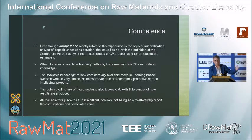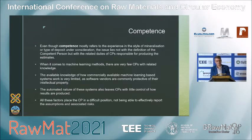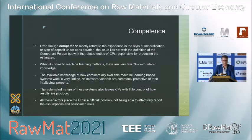In fact, even if we don't consider the reporting codes and just consider good practice — how can you possibly claim that you know what you're doing when you don't know how your software works? The automated nature of these systems also leaves competent persons with little control of how results are produced. Because these automated systems have been hard-coded to work in a specific manner, you cannot intervene with how they work. So you don't know how they work and you cannot control how they work — a difficult situation that puts competent people in a position of not being able to effectively report the assumptions and the associated risks.